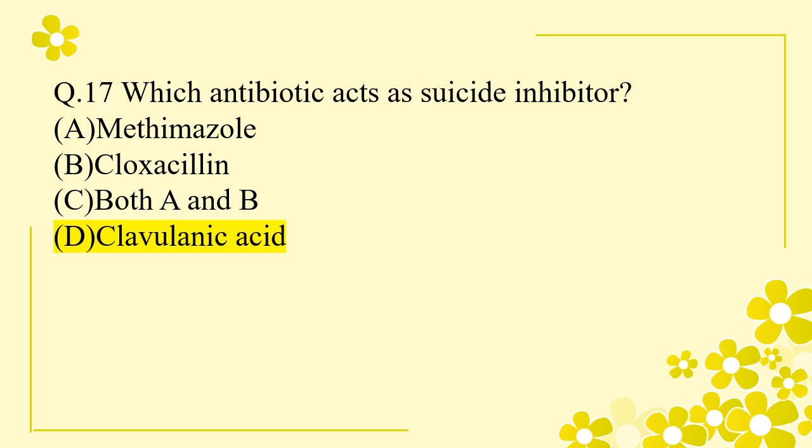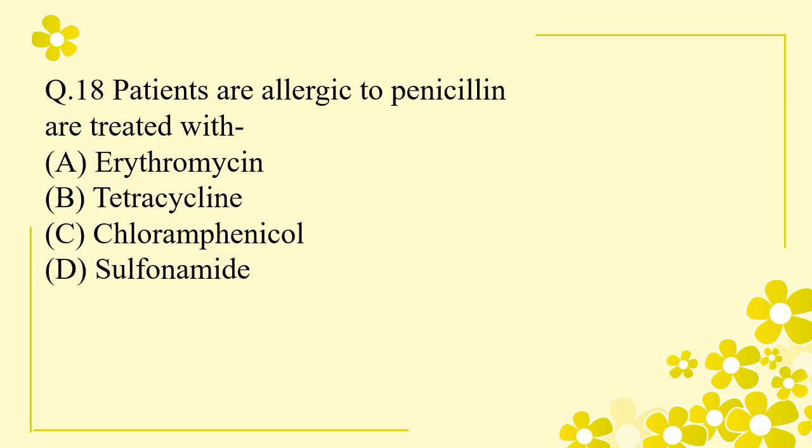Most important question. Question 18: Patients who are allergic to penicillin are treated with — Option A: erythromycin. Option B: tetracycline. Option C: chloramphenicol. Option D: sulfonamide. The right answer is erythromycin. Patients who are allergic to penicillin should be treated with erythromycin.